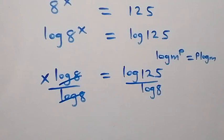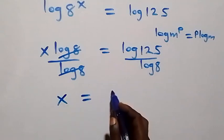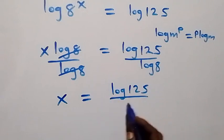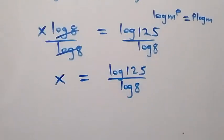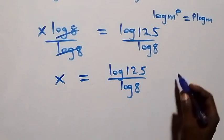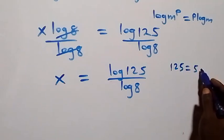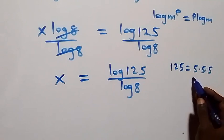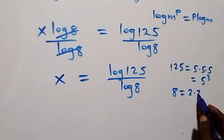Log 8 cancels on each side, giving us x equals log 125 over log 8. We can reduce this further: 125 is the same as 5 times 5 times 5, which is 5 raised to power 3, and 8 is 2 times 2 times 2, which is 2 raised to power 3.